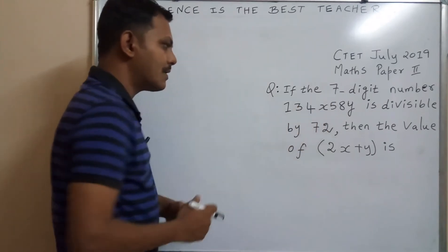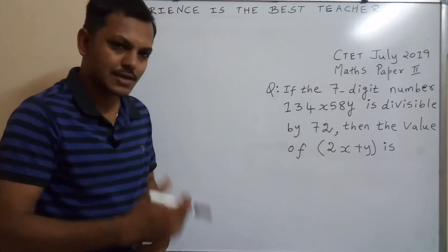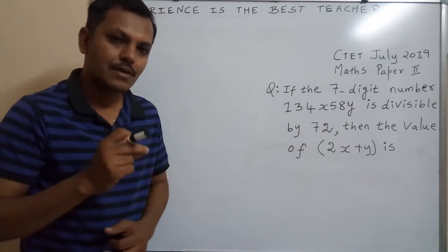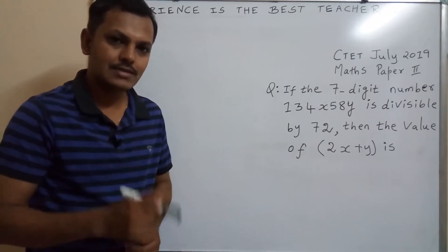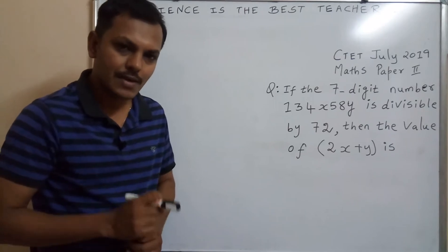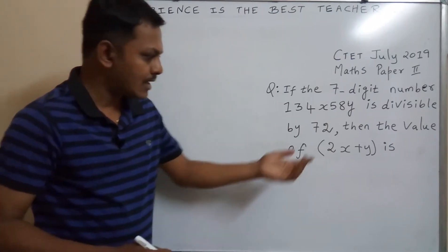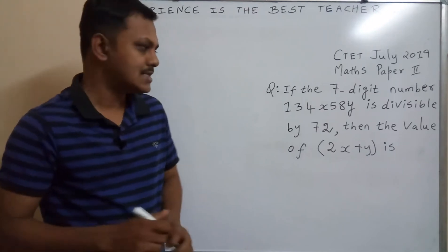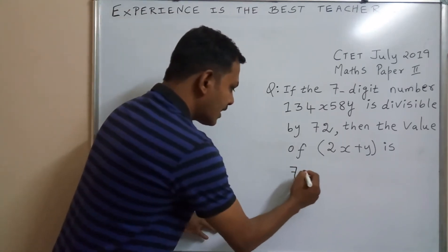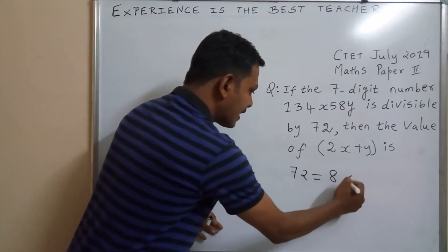If any 7-digit number or any number is divisible by 72, that particular number must be divisible by the product of 72. That is, that particular number is divisible by 8 and 9. We can write this 72 as 36 into 2 also, but for our convenience, we can write this 72 as the product of 8 into 9.